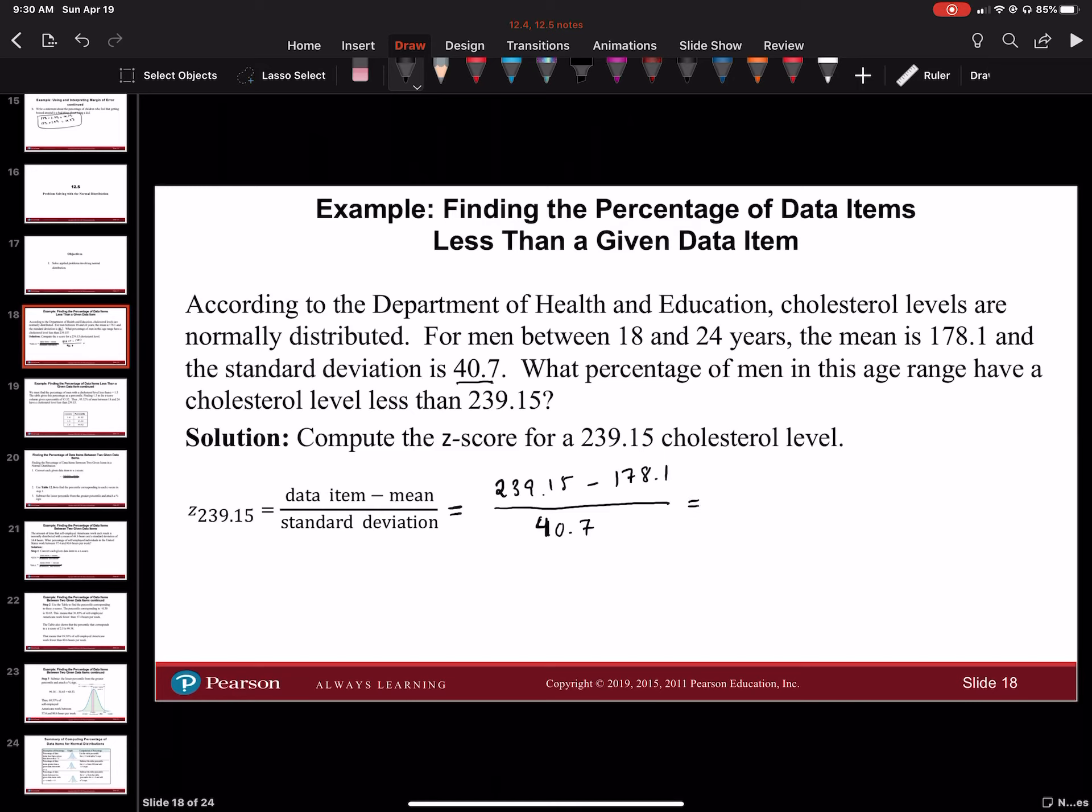If you put the top in first, this is going to be 61.05, all over 40.7, which equals 1.5.